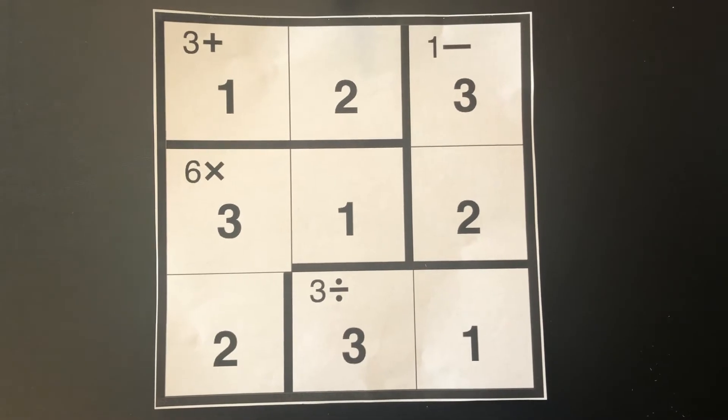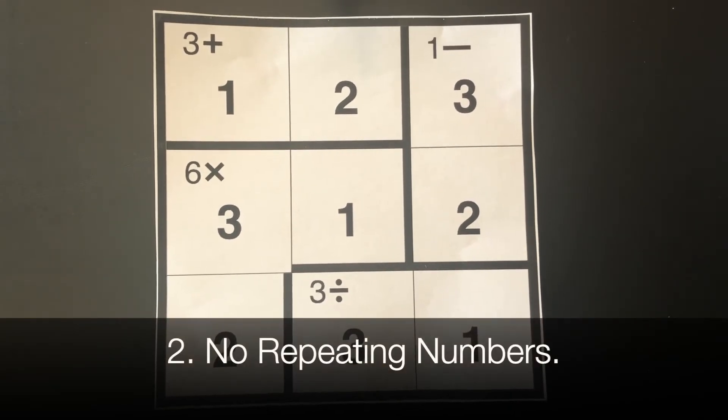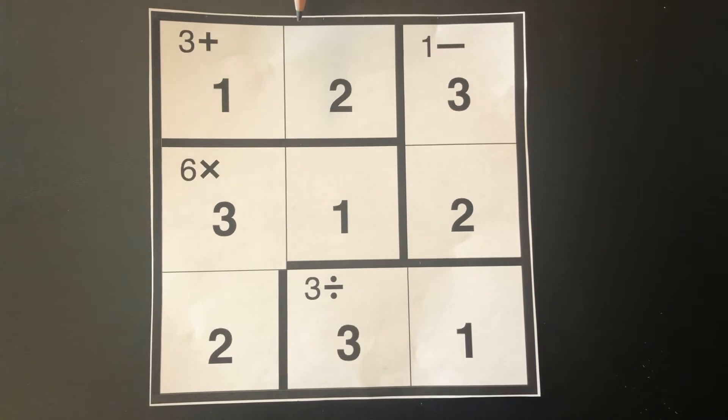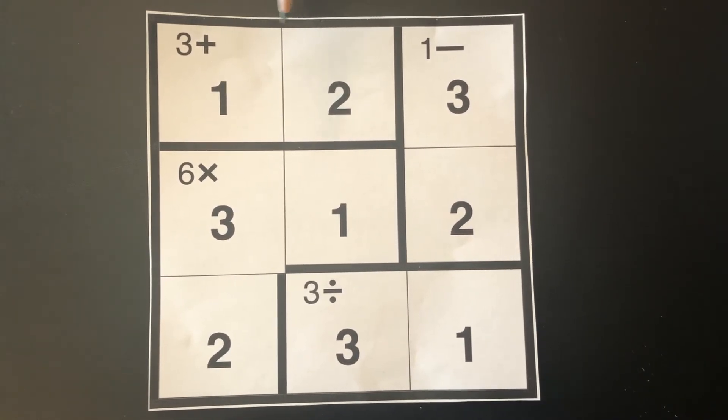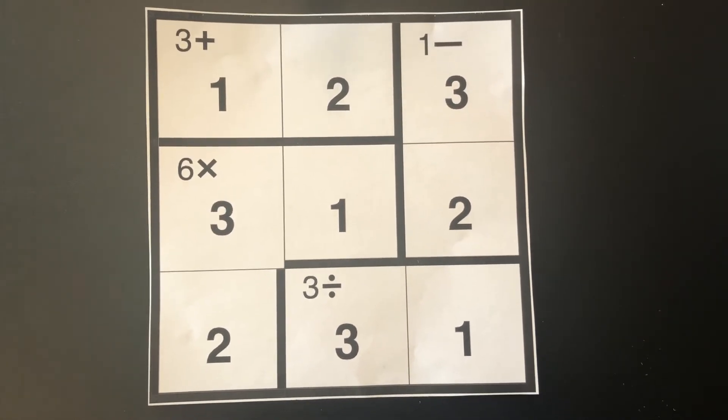Number two, there are no repeating numbers in any row or column. For example, a three by three puzzle has only the numbers one through three in each row and column.